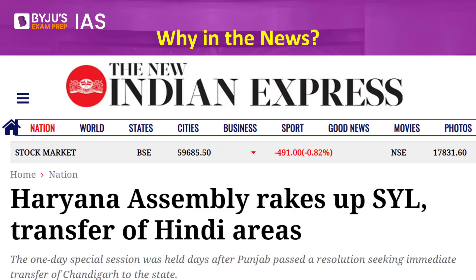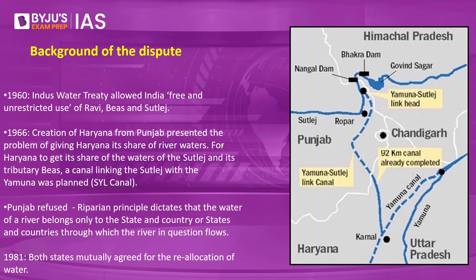This issue of the Sutlej-Yamuna Link canal goes back to 1960, when the Indus Water Treaty was signed — mediated by the World Bank between India and Pakistan. This treaty divided six rivers — the Indus and its five tributaries — between the two countries. India got free and unrestricted use of the Ravi, Beas, and Sutlej, while the Indus, Chenab, and Jhelum were given to Pakistan.